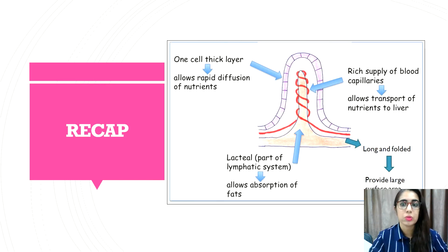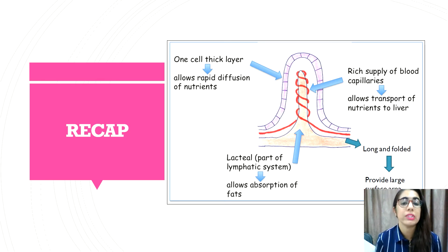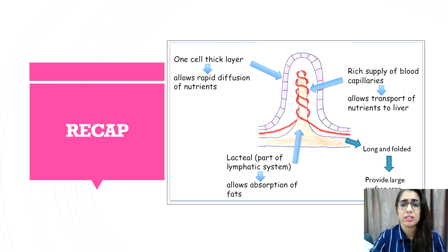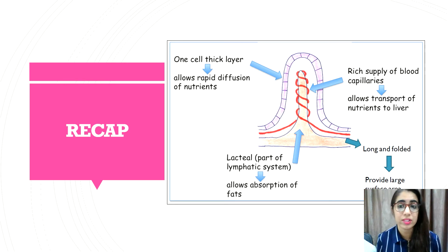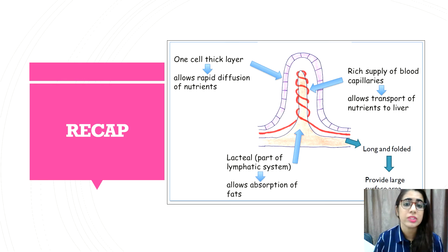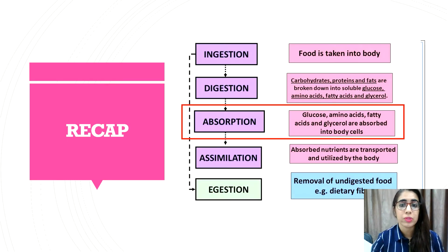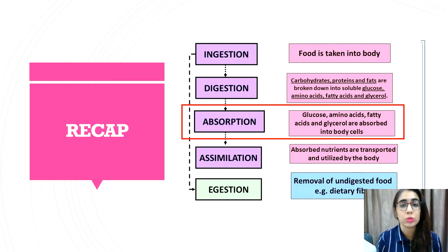Let's recap a little on our previous lesson. In our previous lesson, you have learned on the structure of villus, where the epithelial cell of the villus is about one cell thick for rapid diffusion of nutrients. We have a network of capillaries in the villus to allow transport of nutrients to the liver. And lastly, we also have the lacteal in the villus, which is part of the lymphatic system to allow the absorption of fats. So we have learned about absorption, which means taking molecules in their monomer forms and absorbing them into the circulatory system.